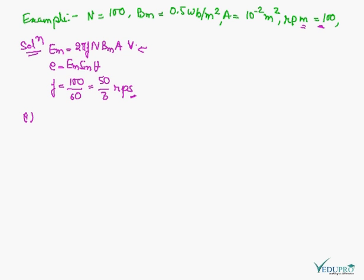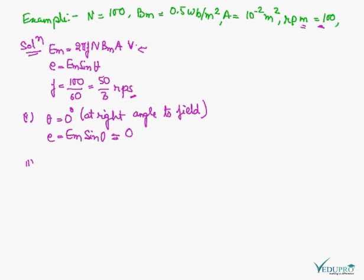Theta will be 0 degrees because this is the condition at right angle to the field. So e equals Em sine 0, and sine 0 is 0, so this becomes 0. Now second condition is when the plane of the coil is in the plane of the field.